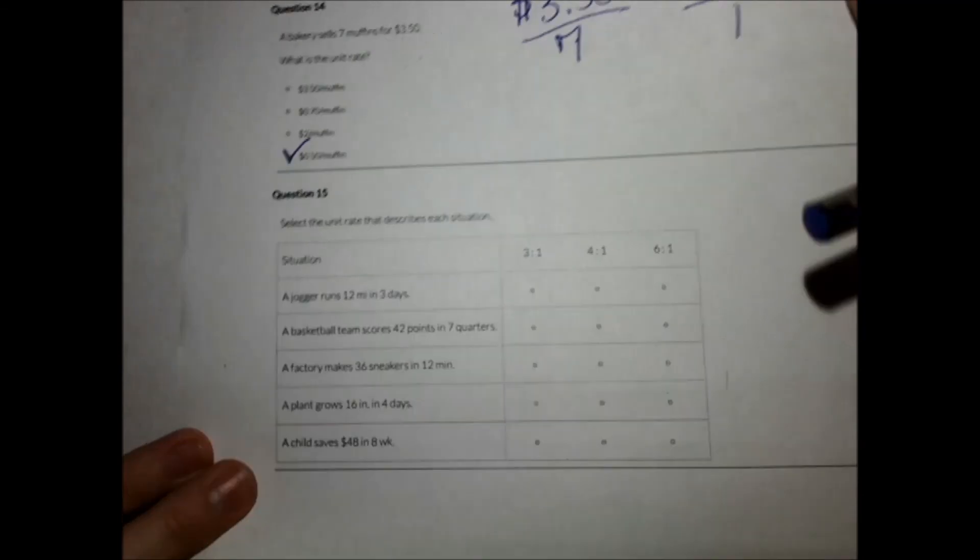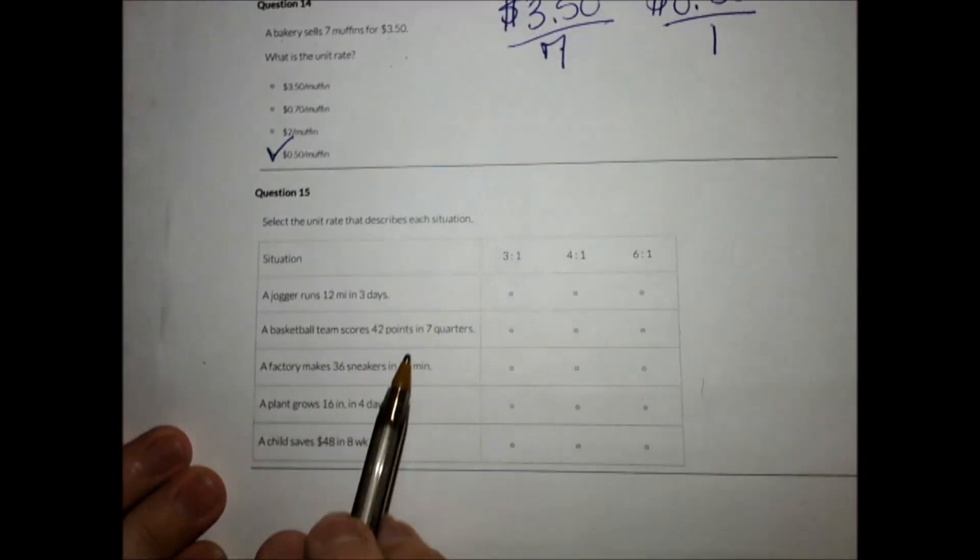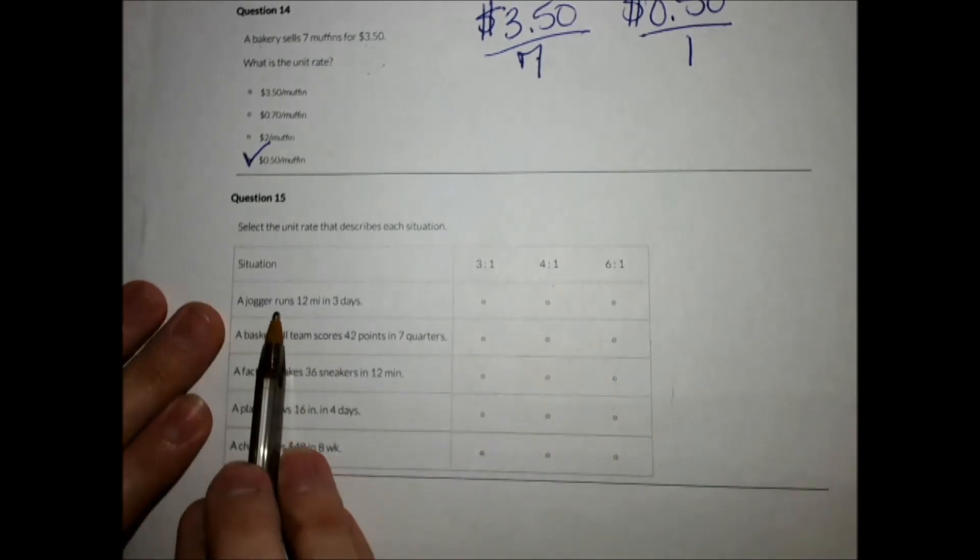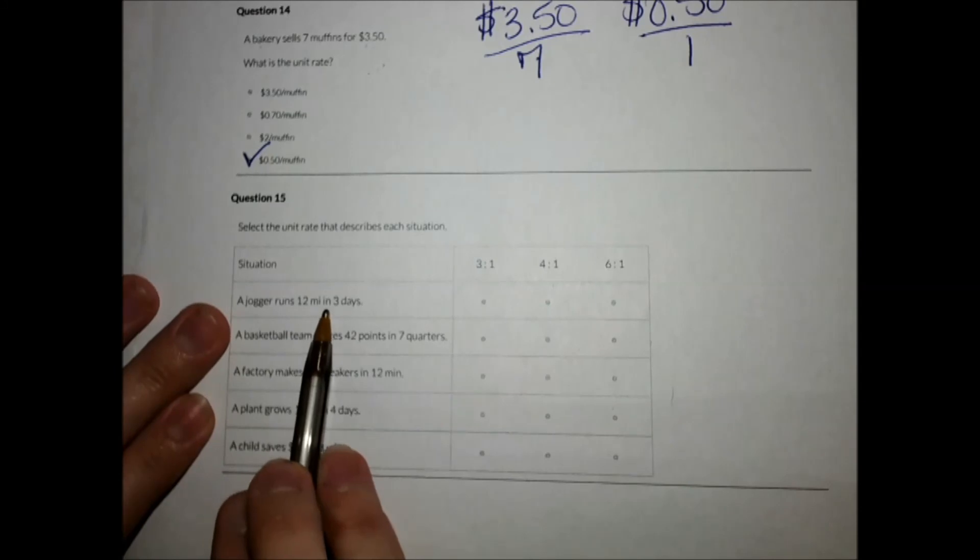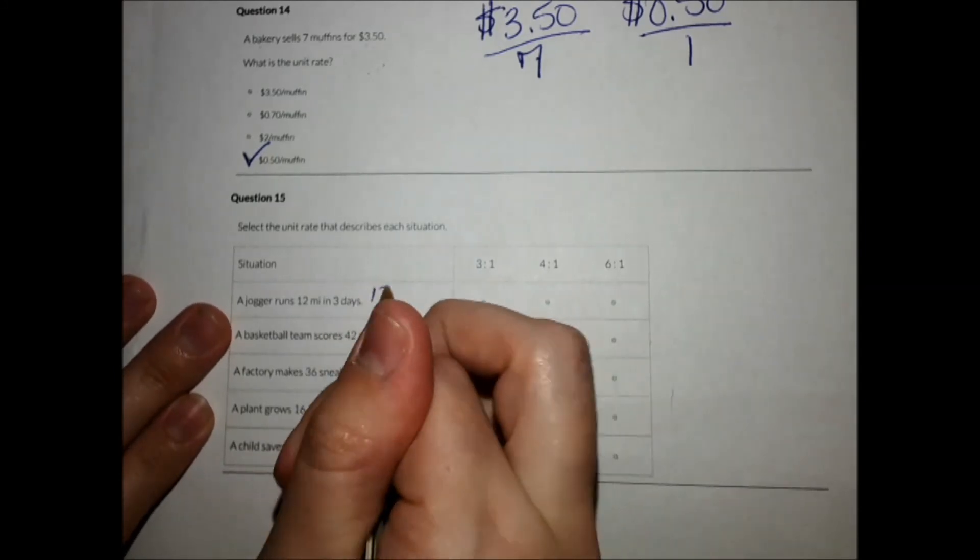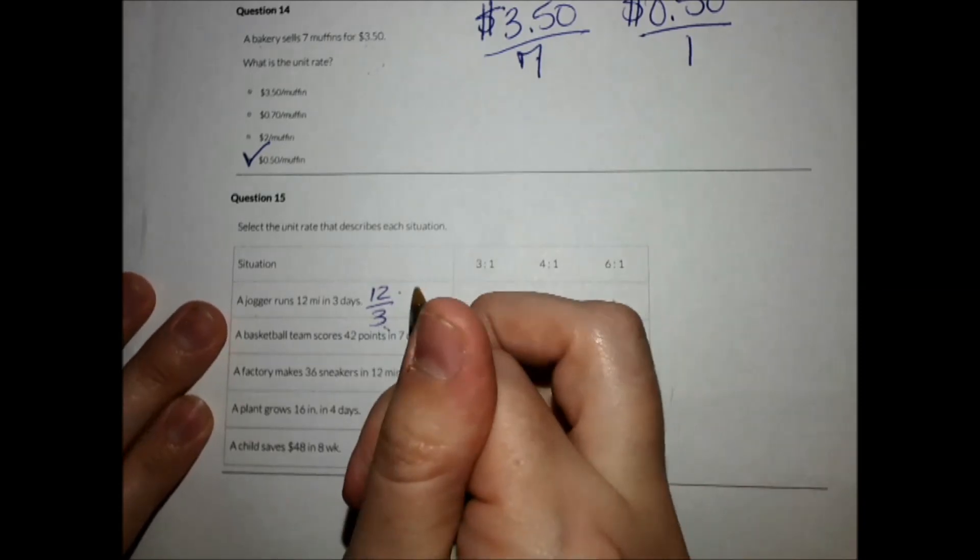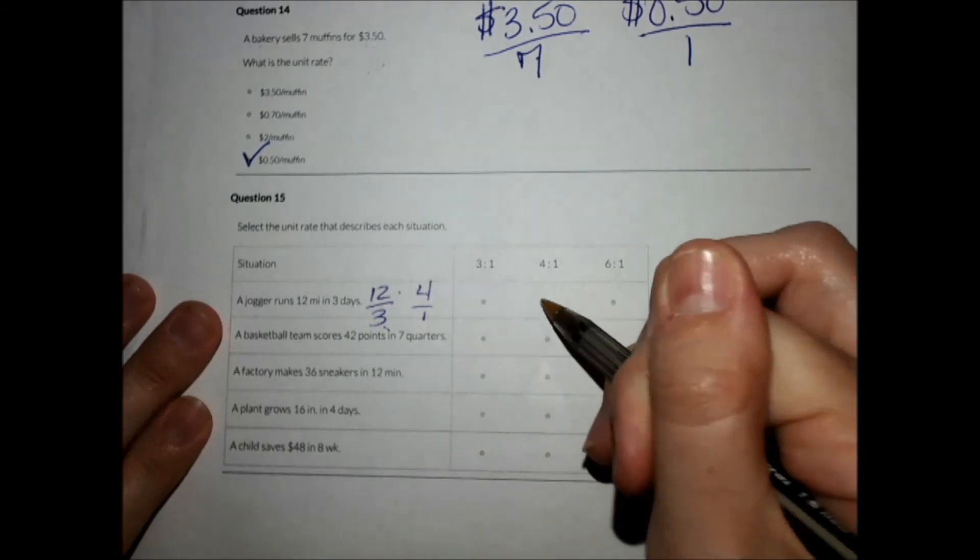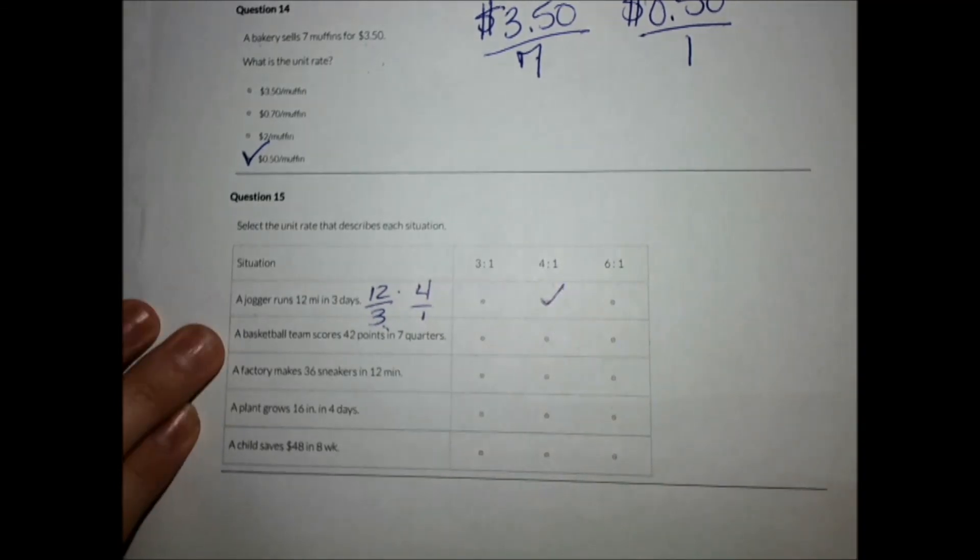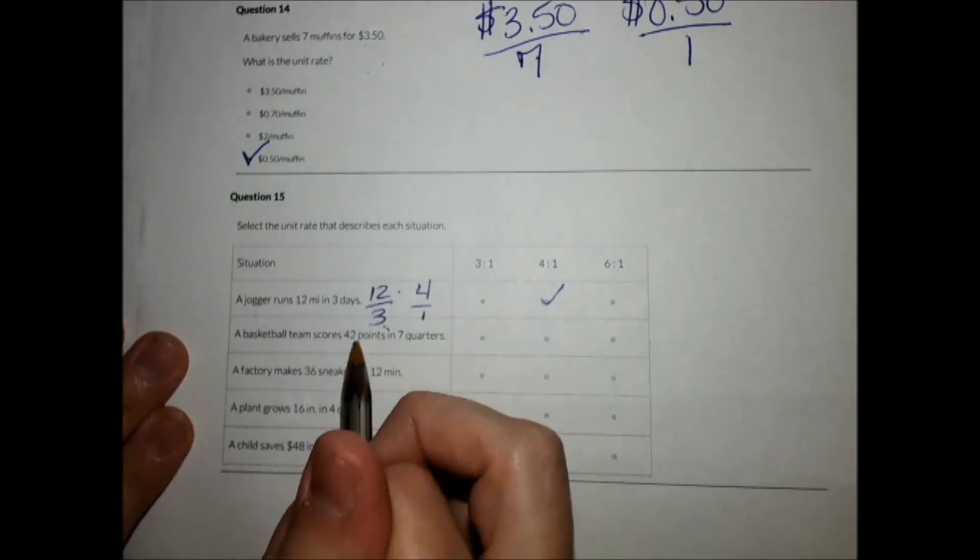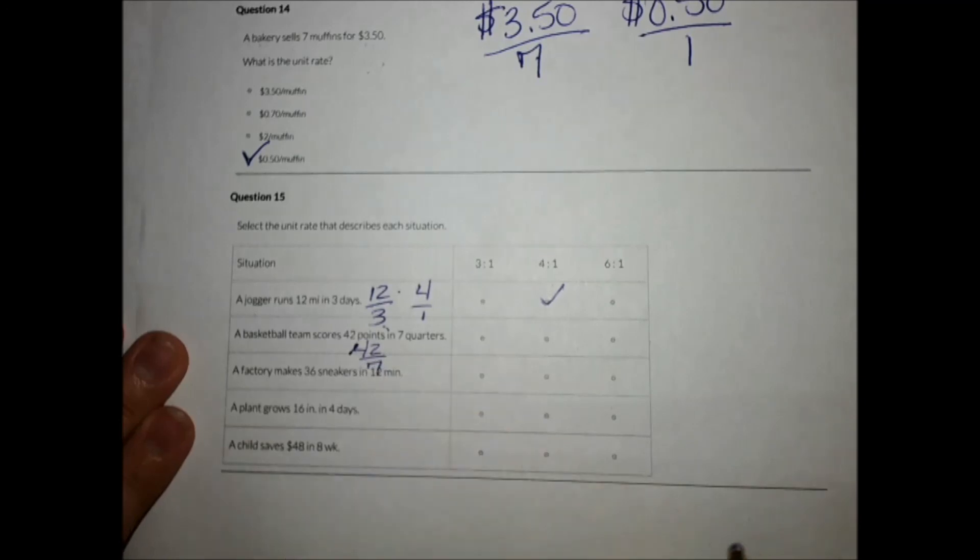And the last one on our problems. Select the unit rate that describes each situation. So you've got 3 to 1, 4 to 1, or 6 to 1. A jogger runs 12 miles in three days. Well, if I was to simplify this, it would be 12 over 3. Divide the top and the bottom by 3, and I do get 4 over 1. So I'm going to check that one. The next one, a basketball team scores 42 points in seven quarters. So 42 over 7. If I simplify that by dividing the top and the bottom by 7, I get 6 over 1.